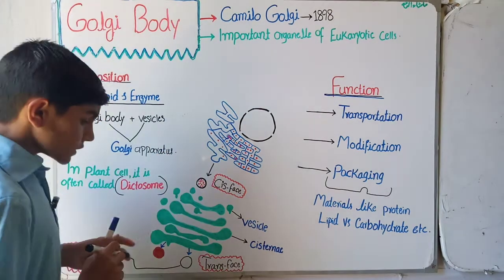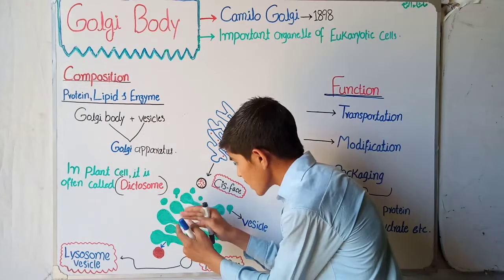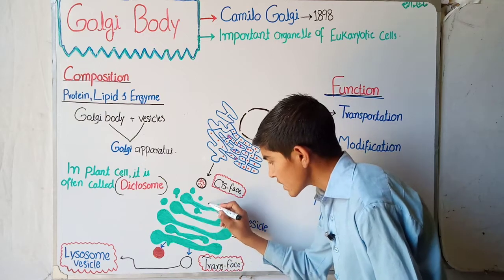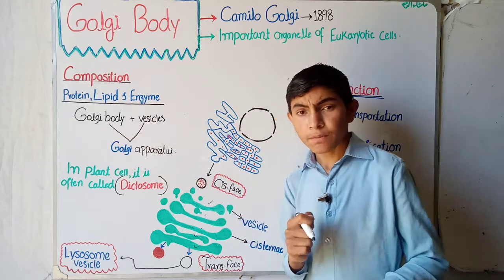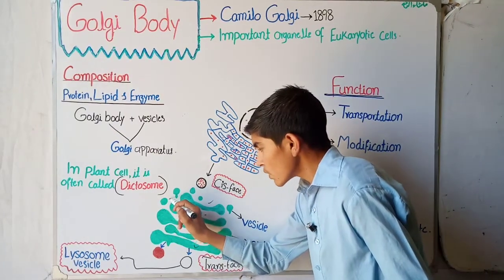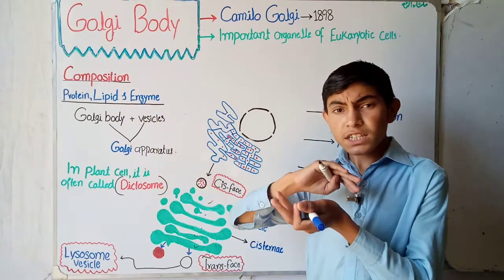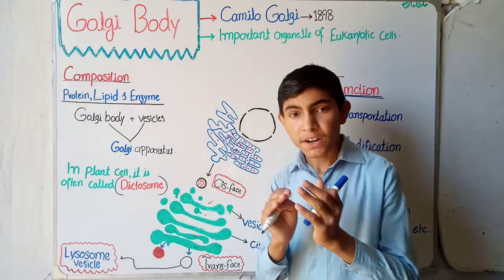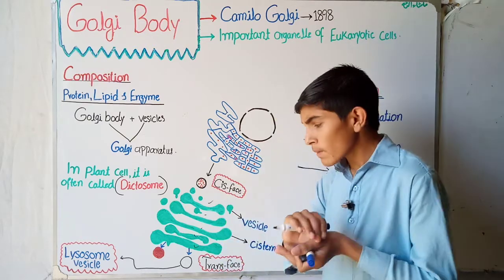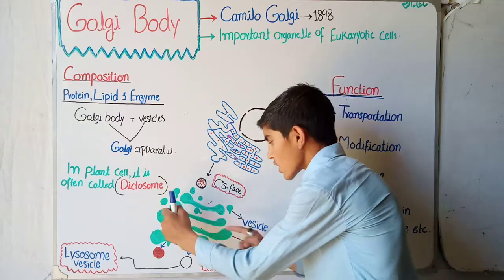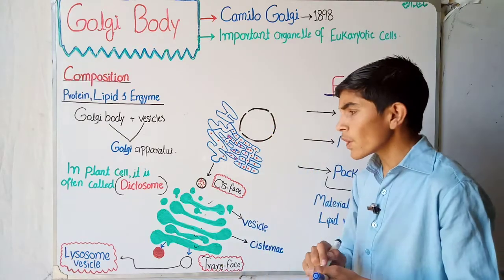A very important point: when there is only the flat stack structure, these stacks alone are called the Golgi body. But when the vesicles are also present, the vesicles and the Golgi body together are called the Golgi apparatus. Remember this for MCQs — the Golgi apparatus is the combination of the Golgi body stacks plus vesicles.